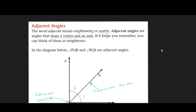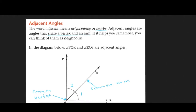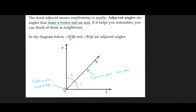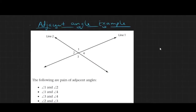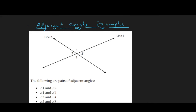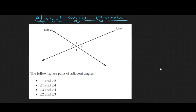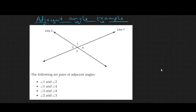Adjacent angles are angles that are nearby or share the same common arm. In this example, angle BQR is adjacent to angle RQS because they share one common arm and vertex. Angles 1 and 4 share common line 1; angles 1 and 2 share common line 2; angles 2 and 3 share common line 1; and angles 3 and 4 share common line 2. So we have four pairs of adjacent angles in this example.